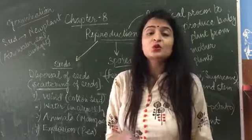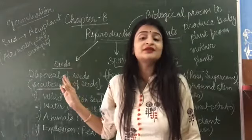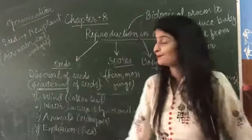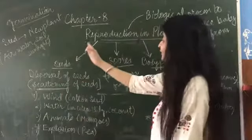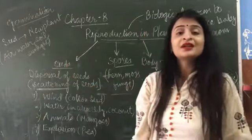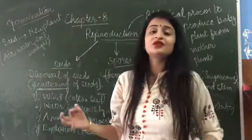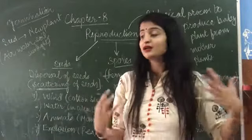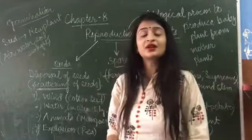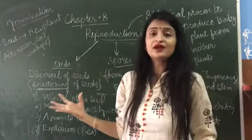We will discuss how the reproduction of plants takes place. The first method is seeds. Normally, if people go to soil and plant seeds, then a new plant can grow.